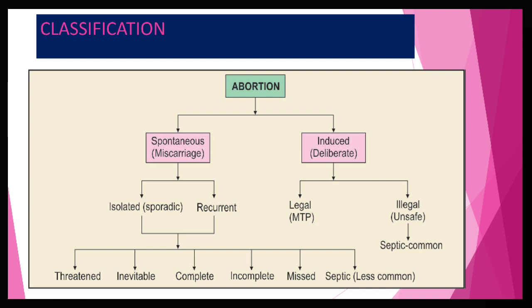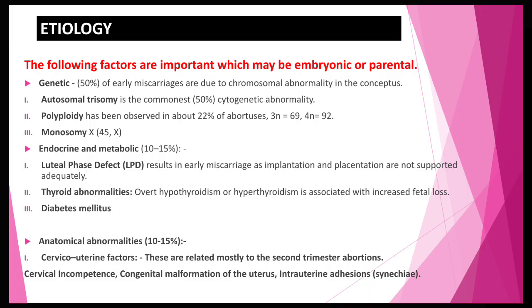Induced abortion may be legal or illegal; septic conditions are common through illegal abortion. Spontaneous is divided into isolated (sporadic) and recurrent. Sporadic means there is a history of normal pregnancy and then abortion occurs. Recurrent means abortion continues after every conception. Both are further divided into threatened, inevitable, complete, incomplete, missed, and septic.